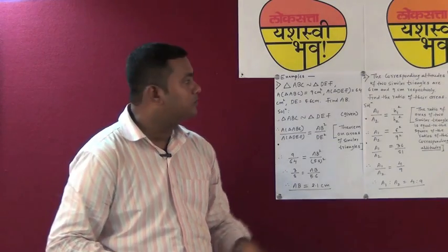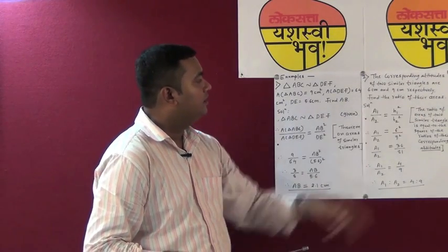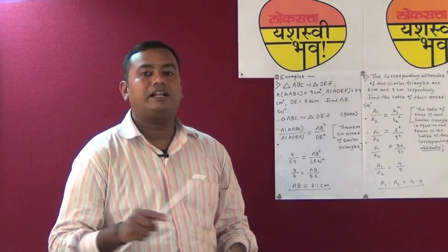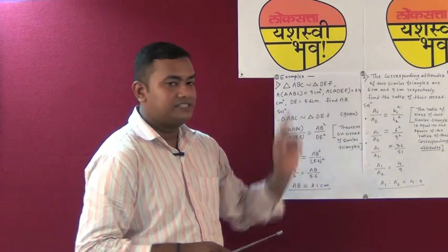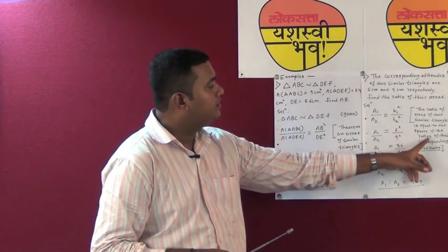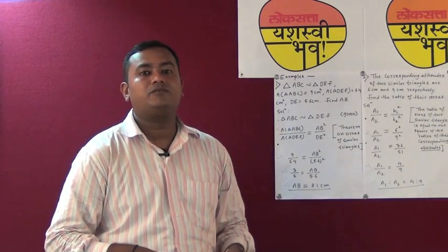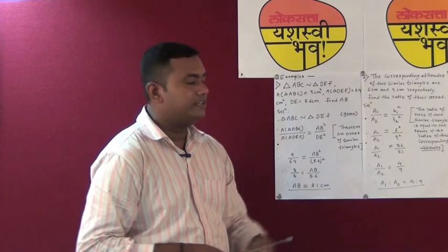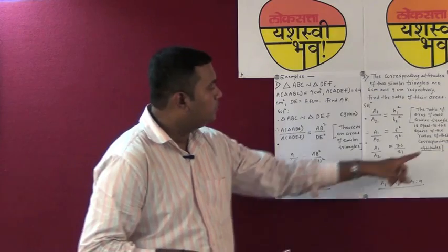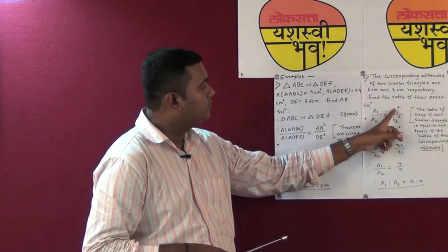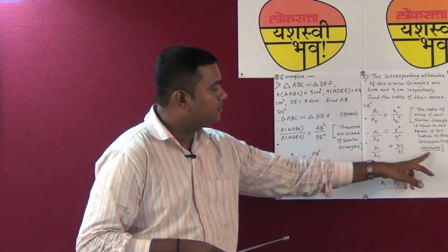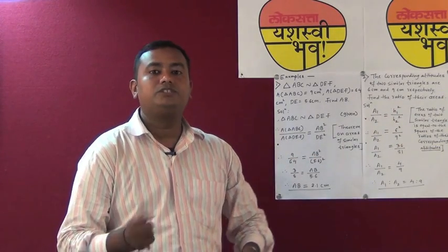In the second sum, the corresponding altitudes of two similar triangles are given as 6 and 9, and we have to find the ratio of the areas. The textbook activity states that if two triangles are similar, the ratio of areas is equal to the ratio of the square of corresponding heights or altitudes. But here the reason is not written as 'theorem of areas of similar triangles.' You have to write the full reason: the ratio of areas of two similar triangles is equal to the ratio of the square of corresponding altitudes. If writing medians, change 'altitude' to 'medians'; if writing perimeters, change it to 'perimeters.'